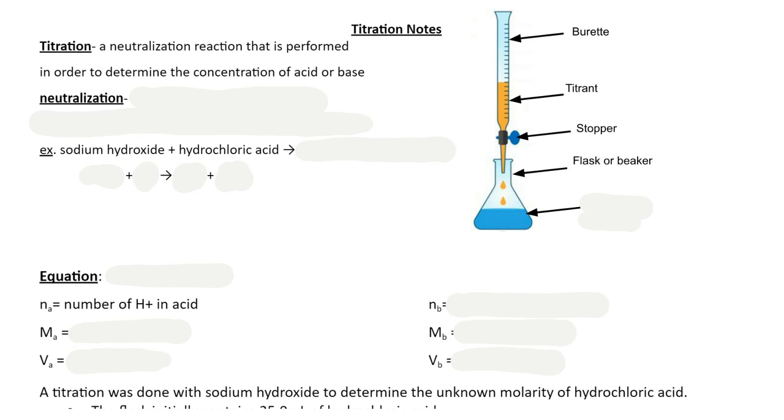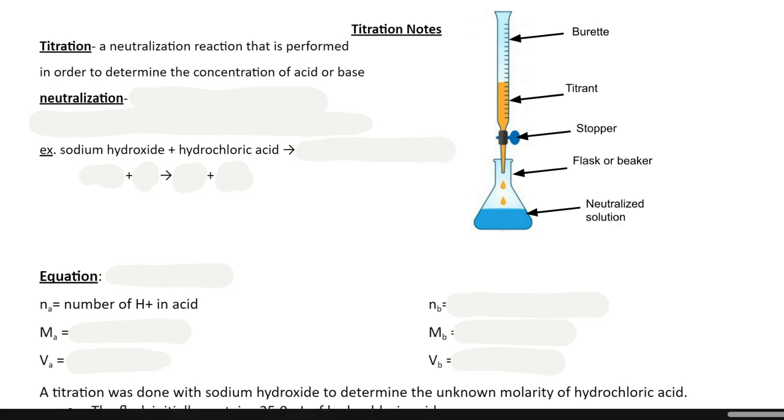I control that flow with a stopper. Now it doesn't matter if you have a flask or a beaker underneath, but what happens is if your titrant is an acid, then I would fill this flask or beaker with the base. When I combine an acid or a base, at the end of the titration what I'm left with will be some sort of neutralized solution.